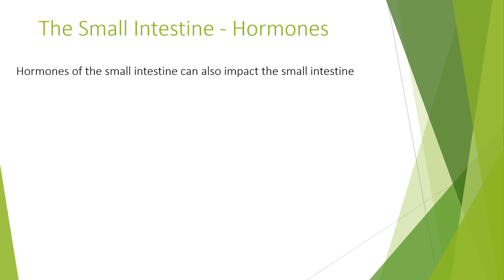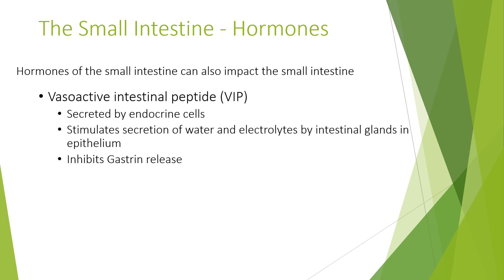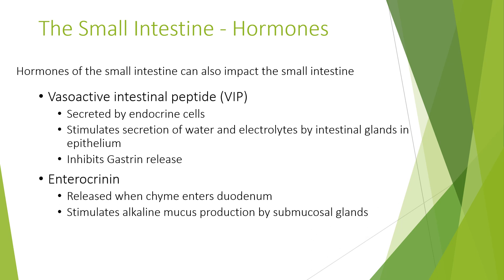The hormones of the small intestine can also impact the small intestine itself. Vasoactive intestinal peptide (VIP) is secreted by endocrine cells and stimulates secretion of water and electrolytes by intestinal glands and epithelium, and inhibits gastric activity. The alkaline mucus prevents the intestinal cells from the acidity of chyme. Enterotranin is released when chyme enters the duodenum, which stimulates alkaline mucus production by submucosal glands.